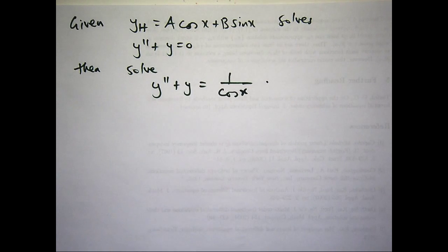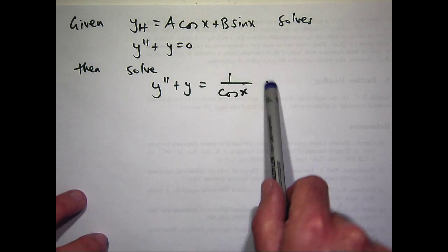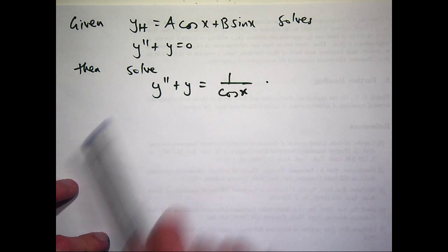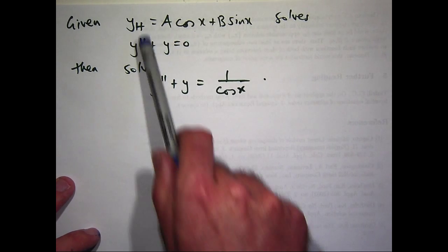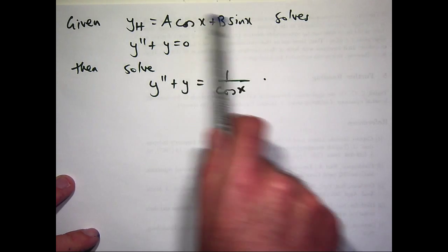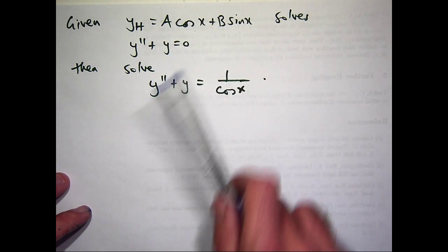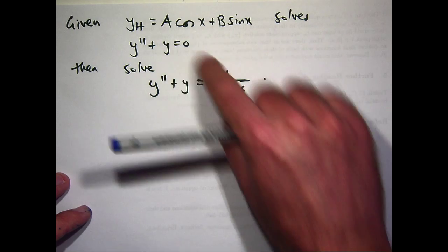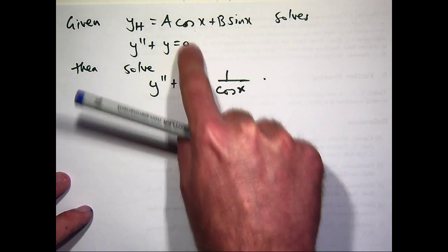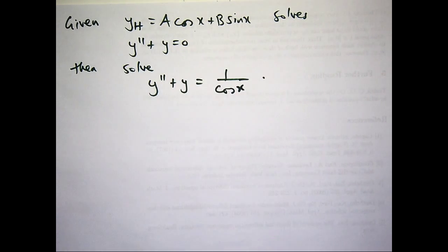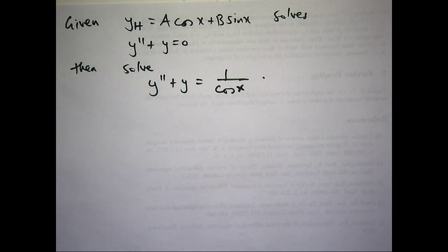Now, the printer didn't print all the pages that I wanted, so I've just handwritten it in. We're asked to solve this problem here and we're given a little hint. We're told that this is the general solution to the corresponding homogeneous problem. So these two problems are the same except there's a zero here and a function here. This is called the homogeneous problem. So big A and big B are constants.